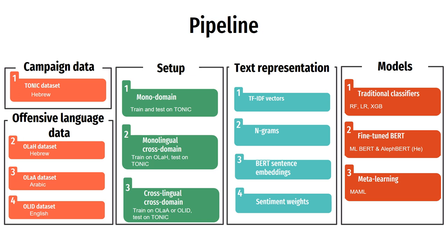We explored different text representations starting from classic TF-IDF and n-grams of characters, and ending with sentence embeddings and sentiment weights. As classification models, we applied three traditional classifiers: random forest, logistic regression, and extreme gradient booster. We also tried two different pre-trained BERT models — one trained on multiple languages, which we call multilingual BERT, and another trained exclusively on Hebrew text, which we call AlephBERT. We also explored a meta-learning model called MAML.